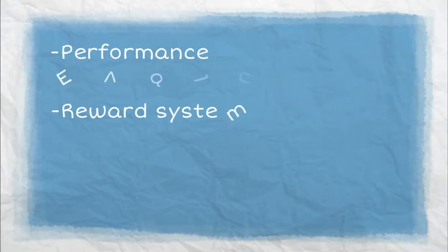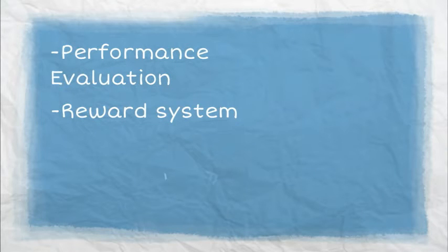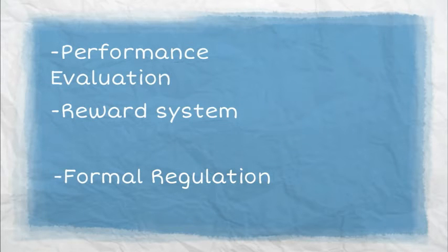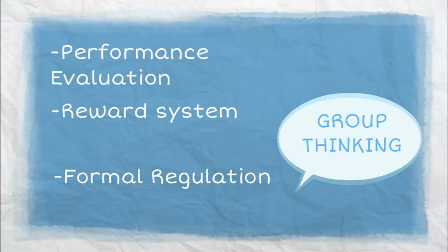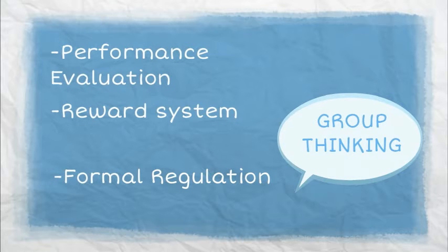Besides, organizational structure influenced decision-making. Firstly, the performance evaluation and related reward system. Next, formal regulation. Without it, the Interactive can be easily subject to groupthink. When Mr. Duesenberry came up with the $1 billion target, nobody took action to stop it.